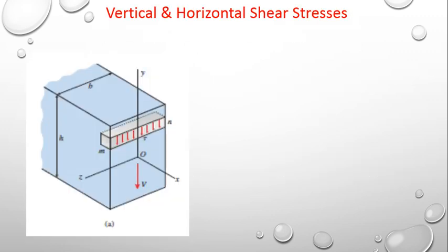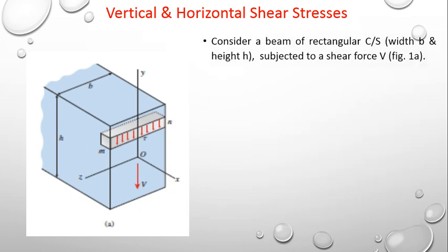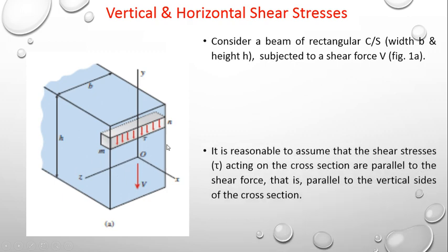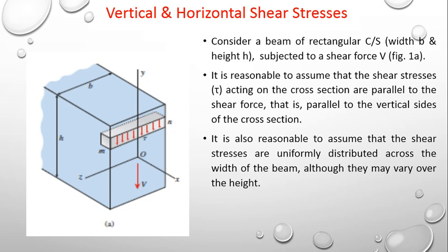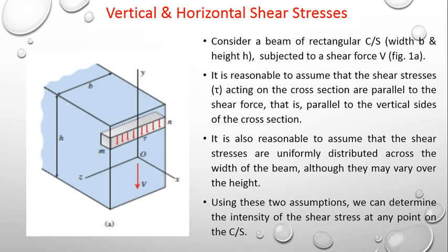Consider a beam of rectangular cross section of width B and height H, subjected to a shear force V. It is reasonable to assume that the shear stresses tau acting on the cross section are parallel to the shear force, that is parallel to the vertical sides. It is also reasonable to assume that the shear stresses are uniformly distributed across the width, although they may vary over the height. Using these two assumptions, we can determine the intensity of the shear stress at any point on the cross section.